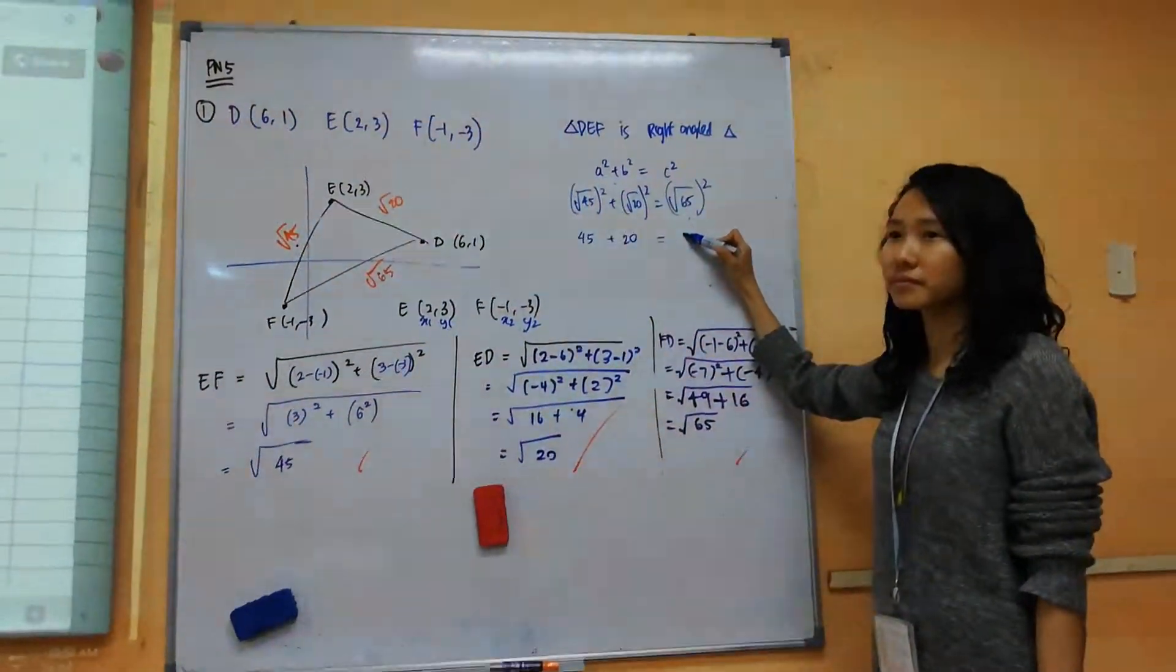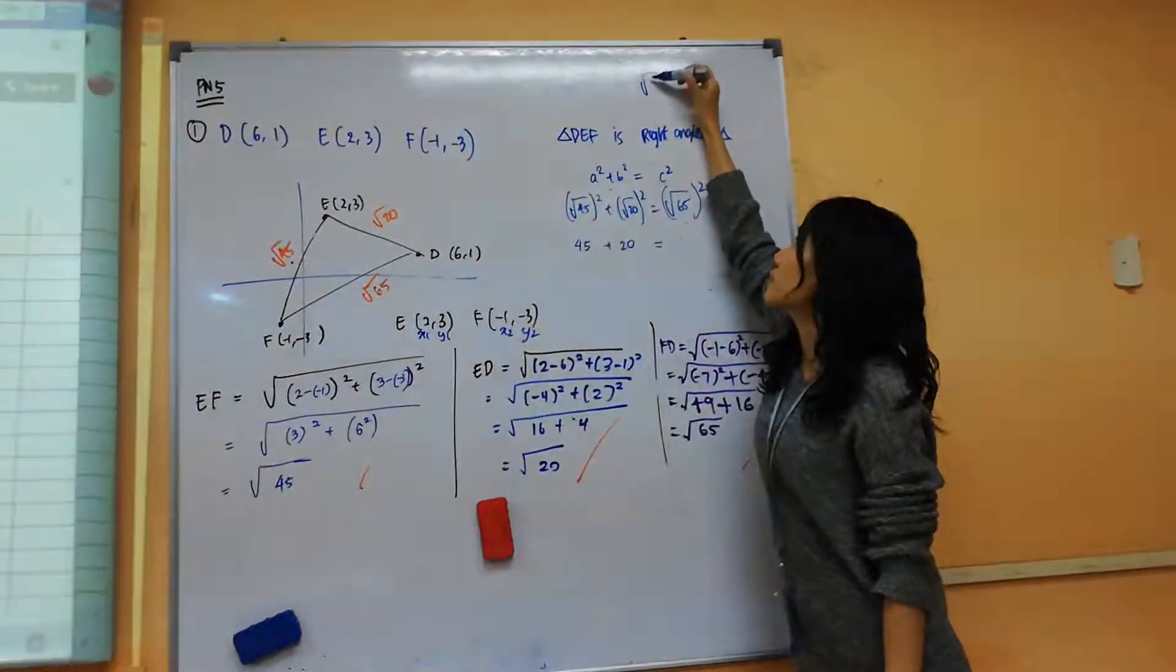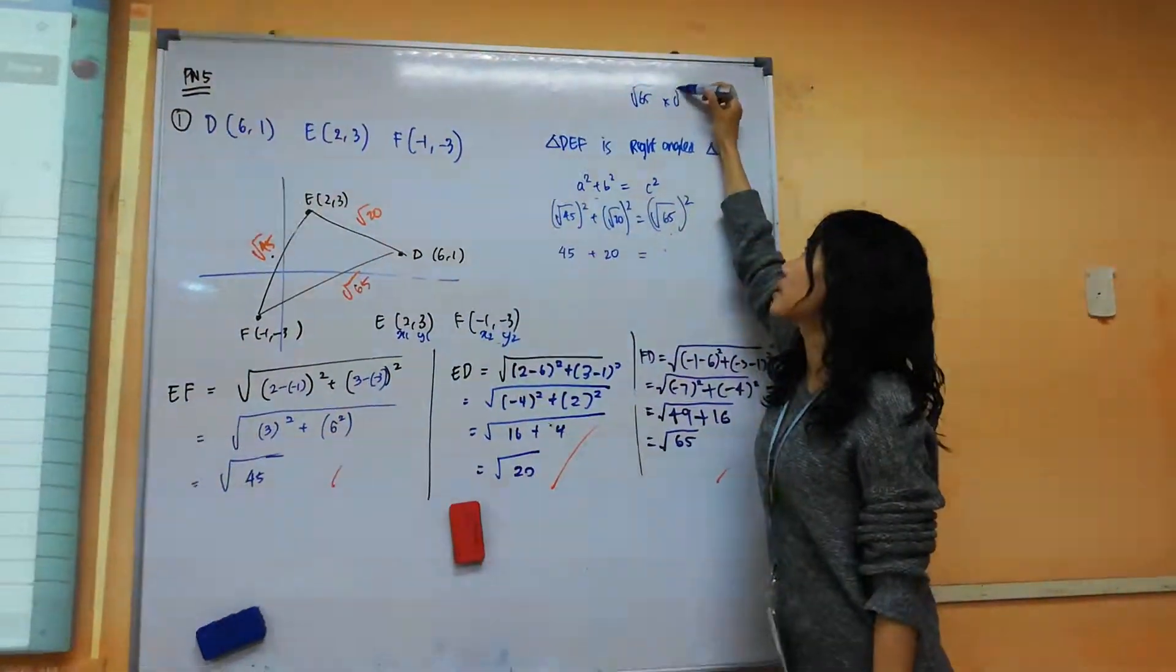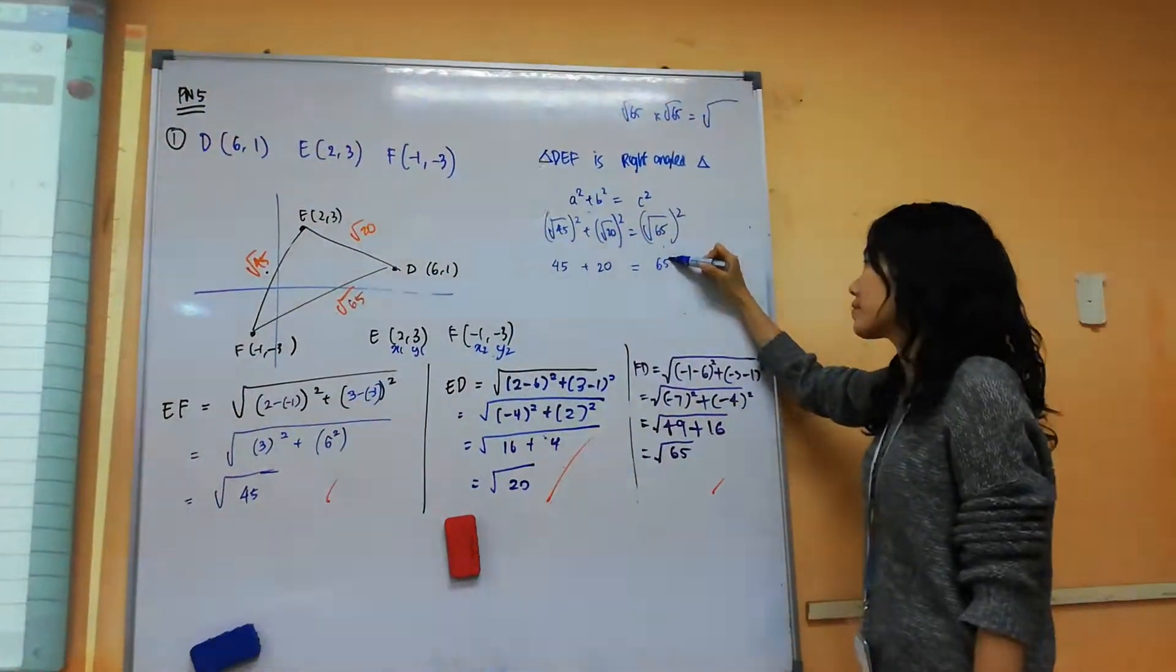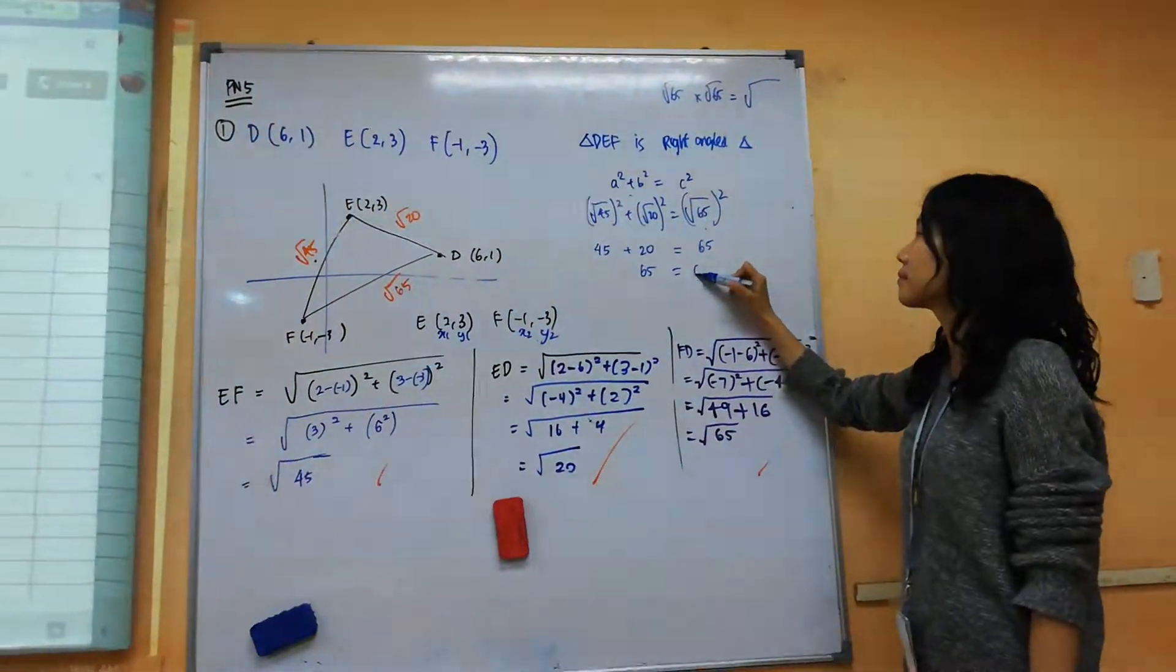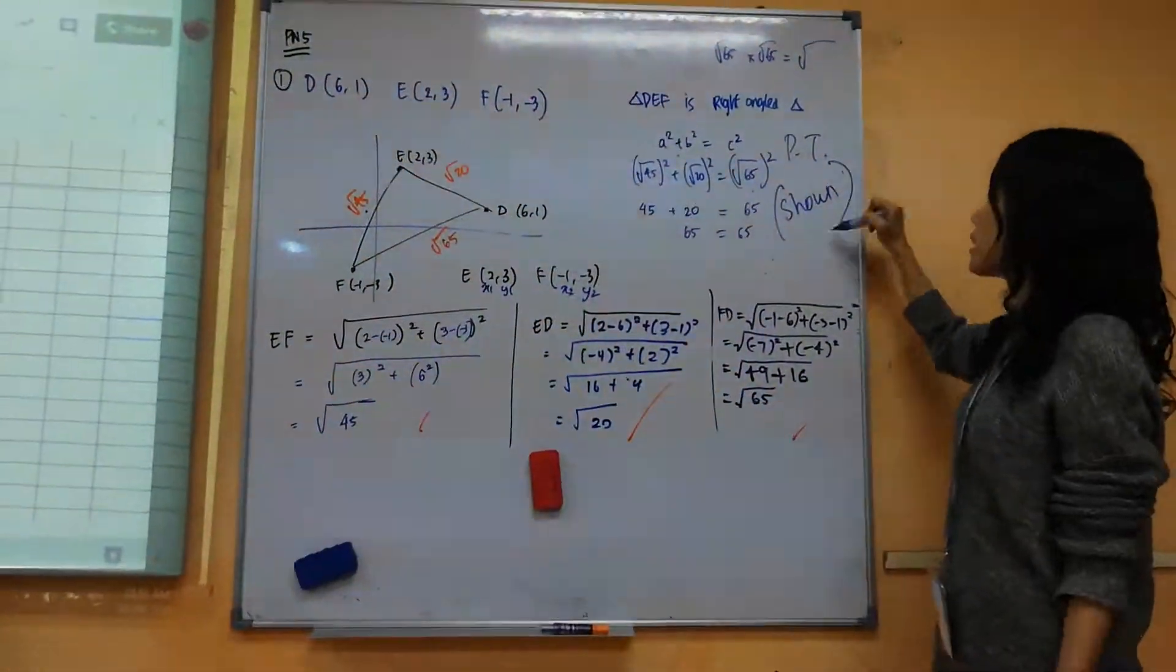Square root 65 times square root 65. You can press your calculator if you want. Yeah, it won't be there anymore. So you get 65. Is it the same? Yes. So it fits by Pythagoras theorem. So it is showing that it is a right angle triangle.